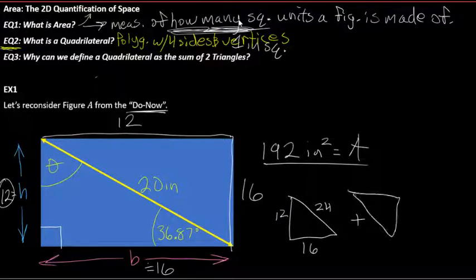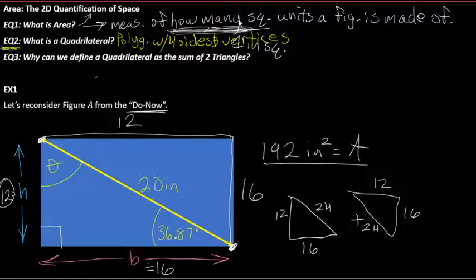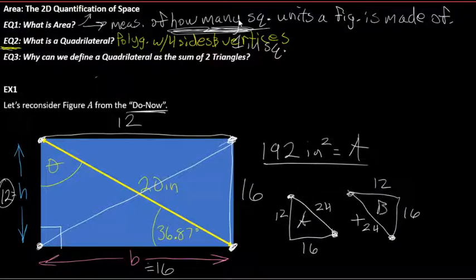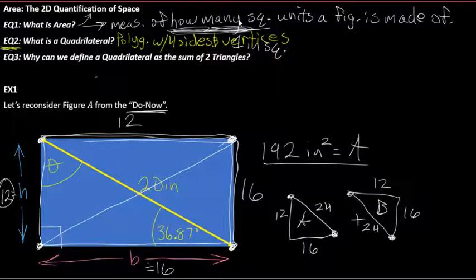We have this triangle plus this triangle. Where they come together, we can call that a diagonal. A diagonal is simply the distance between two vertices on a quadrilateral — or really on any polygon that's not a triangle. Every quadrilateral has two diagonals. This diagonal is shared by both triangles.